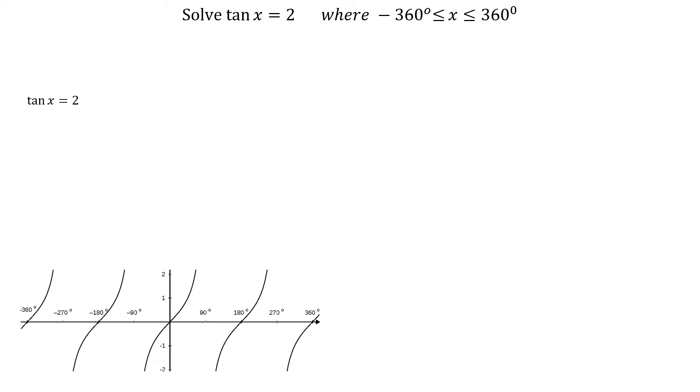To solve tan x equals 2, where x is between minus 360 degrees and plus 360 degrees, we first take the inverse of tan 2, getting 63.43 degrees to two decimal places.